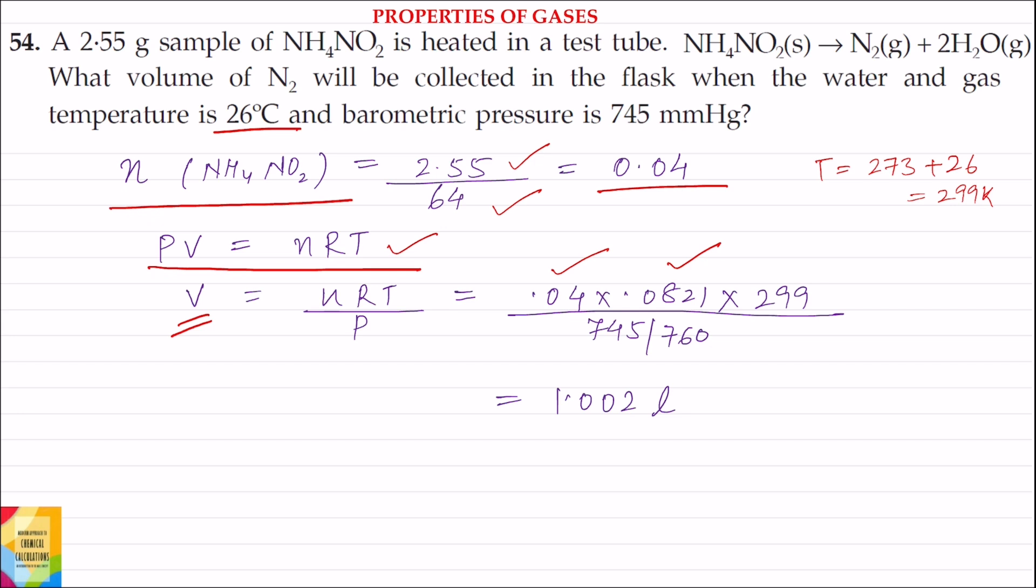Now pressure is given in 745 mmHg. So we have to convert it into atmospheres. So kase convert kareinge? 760 mmHg is equal to 1 atmosphere. So 745 mmHg will be equal to 745 divided by 760 atmospheres.